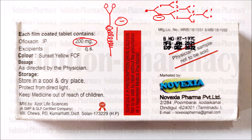Each film-coated tablet contains Ofloxacin 200 mg as the active content. The tablet also contains excipients — agents which do not have their own pharmacological properties but are used to increase the bulk of the main content or support it in some way. The coloring agent used in this tablet is Sunset Yellow FCF. Regarding the dose, this is a Schedule H category drug, so you cannot and should not purchase it without a medical practitioner's prescription.